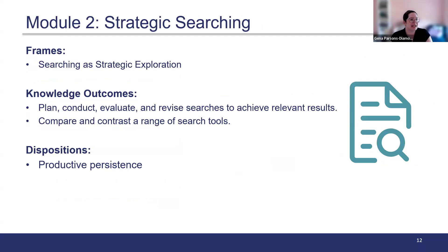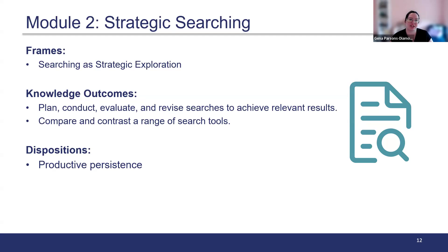Module 2 in TATL is called Strategic Searching, and this module relates to the frame Searching as Strategic Exploration. It focuses on the process of planning, evaluating, and revising searches during strategic exploration. You can see the knowledge outcomes and the dispositions being assessed in Module 2.